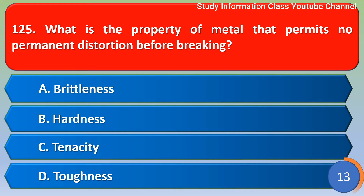Next question: What is the property of metal that permits no distortion before breaking? Option A: brittleness, Option B: hardness, Option C: density, Option D: toughness. The correct answer is Option A — brittleness.